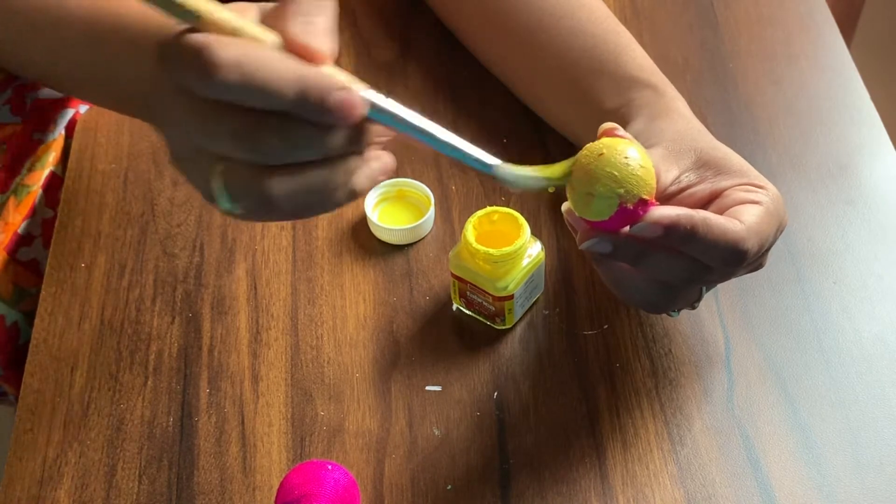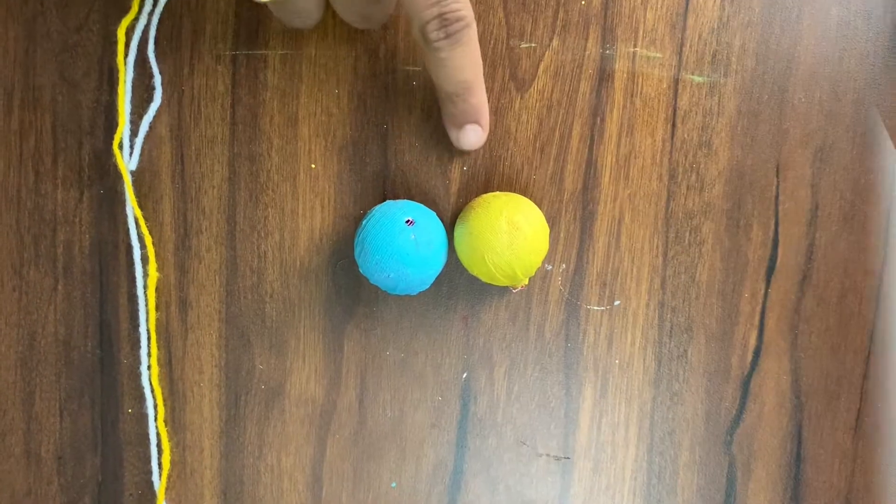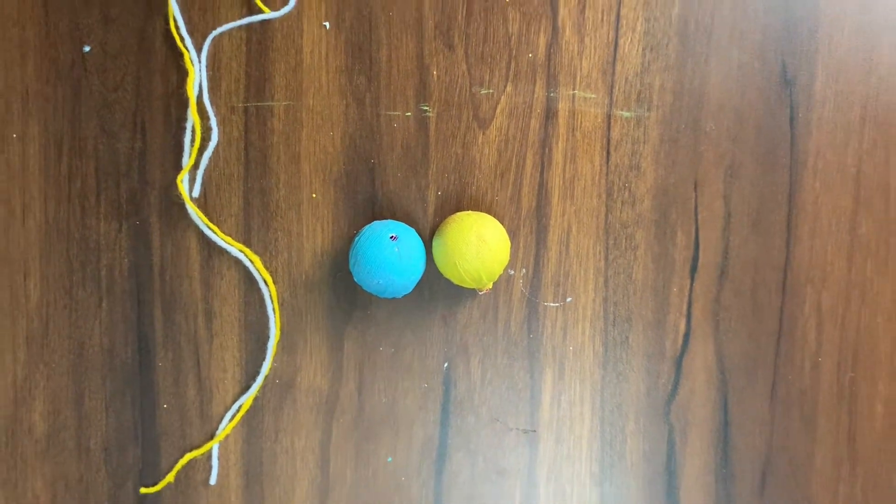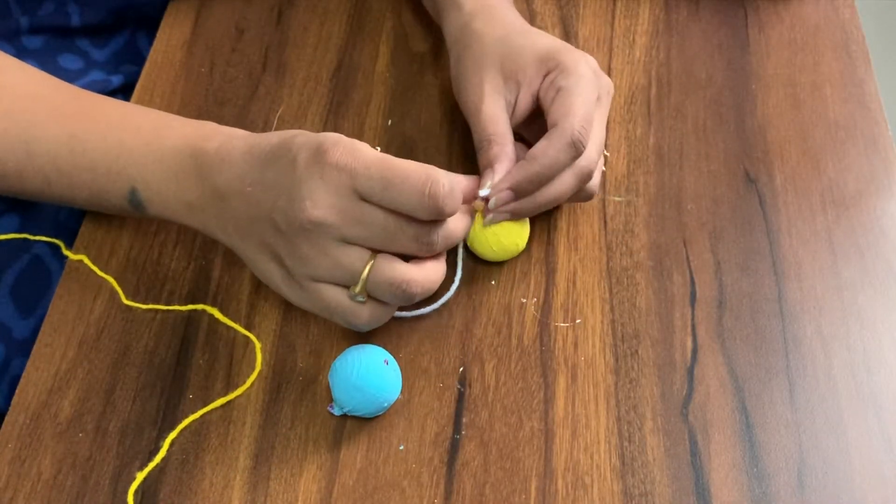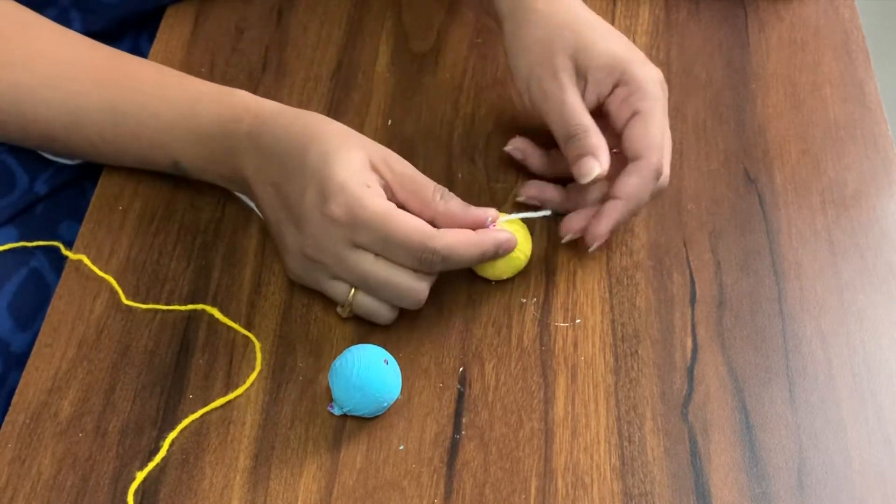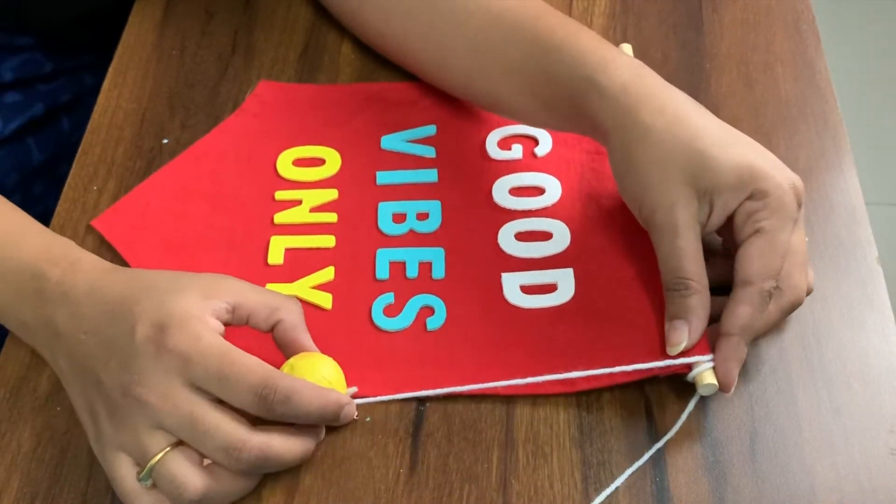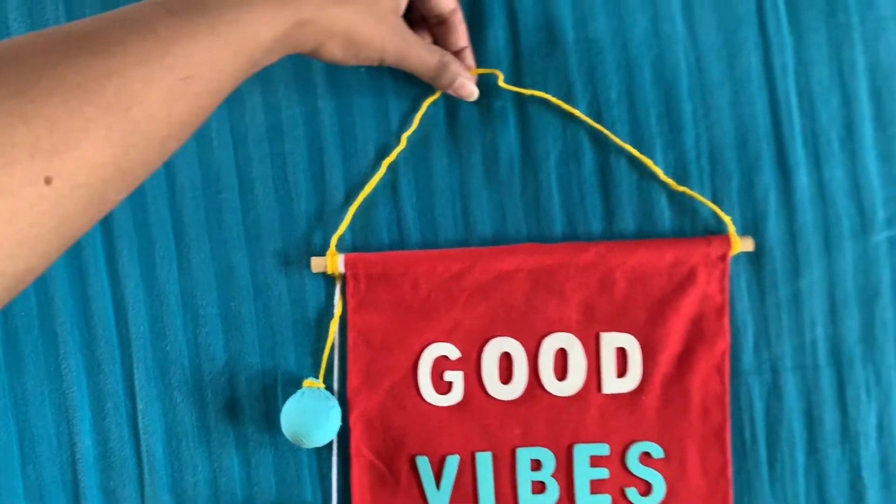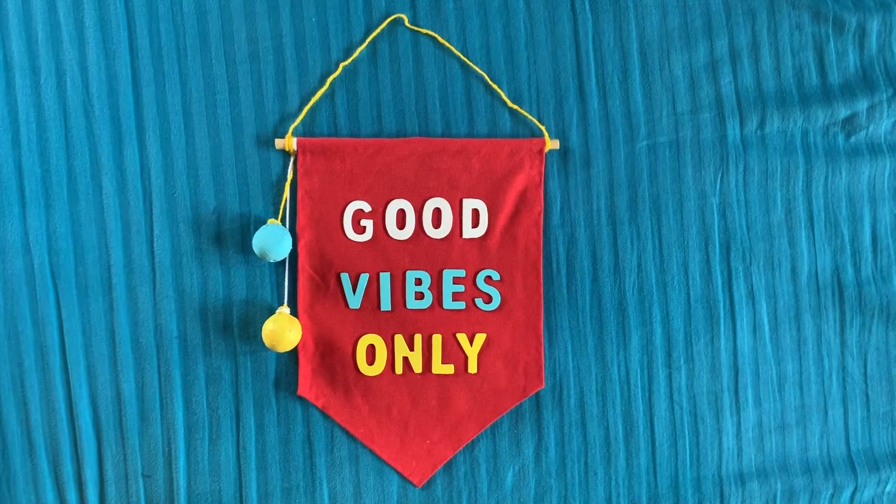I will paint them with yellow and blue. After painting these letters, I will attach them with white and yellow wool. And this is ready.